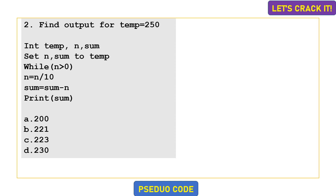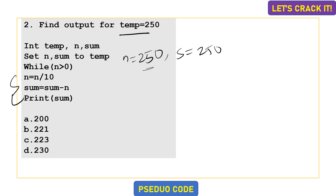Moving on to the second question, we need to find the output for the variable temp equals to 250. There are three integers defined: temp, n, and sum. We set n equals to 250 and sum equals to 250. There is a while loop that executes only when n is greater than zero. Inside the loop, n equals to n divided by 10, which gives the quotient. So 250 divided by 10 gives quotient 25.